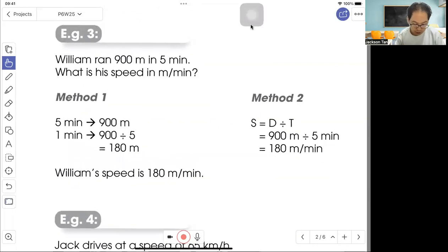Let's look at example three. William ran 900 meters in five minutes. What is his speed in meters per minute? So there are two methods. Method one: five minutes is 900 meters, you find one minute, so divide by 5 is 180 meters. So William's speed is 180 meters per minute. Or method two uses the formula: speed is distance divided by time. So 900 divided by 5 is 180 meters per minute.